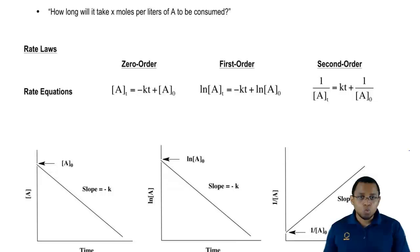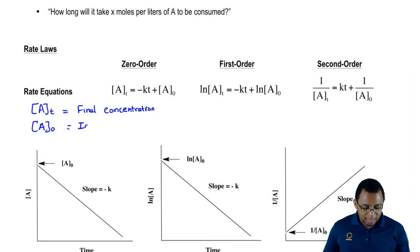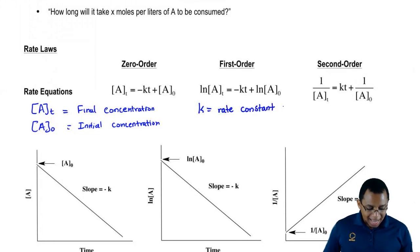We're going to say for zeroth order, first order, and second order, they have the same variables. At represents the final concentration or final amount of our reactant. A sub zero equals the initial concentration of our reactant. K is the same K we've been dealing with, it's the rate constant, and then T is just time.